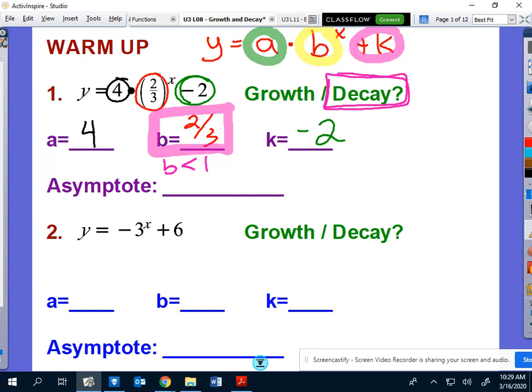So anything that is below the one mark and greater than zero, anything that is below one but greater than zero, it's really important that we determine that that is decay.